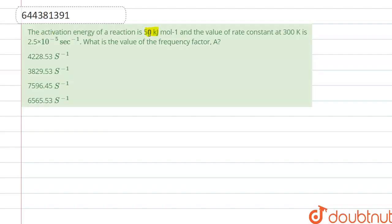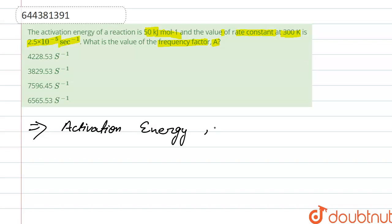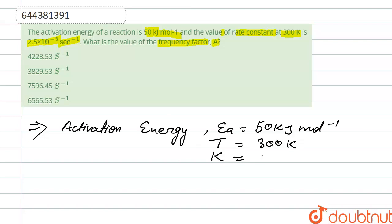The activation energy of a reaction is 50 kilojoule per mole, and the value of rate constant at 300 kelvin is 2.5 into 10 to the power minus 5 second inverse. What is the value of frequency factor, that is A? So here, the activation energy Ea is 50 kilojoule per mole, temperature T is 300 kelvin, and rate constant k is 2.5 into 10 to the power minus 5 second inverse.